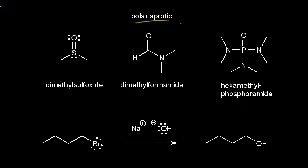Now let's look at polar aprotic solvents. First let's look at dimethyl sulfoxide, more commonly known as DMSO. Oxygen is more electronegative than sulfur, so the oxygen withdraws some electron density and becomes partially negative, and the sulfur would be partially positive. A polar aprotic solvent does not have a hydrogen directly connected to an electronegative atom. The hydrogens on DMSO are directly connected to carbon, and carbon is not very electronegative. That's why this is a polar aprotic solvent.